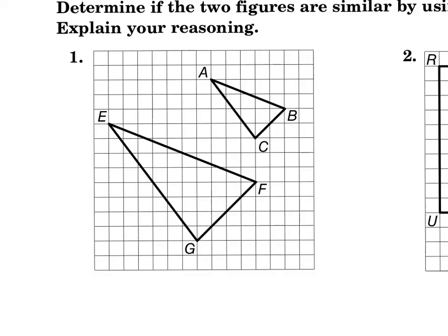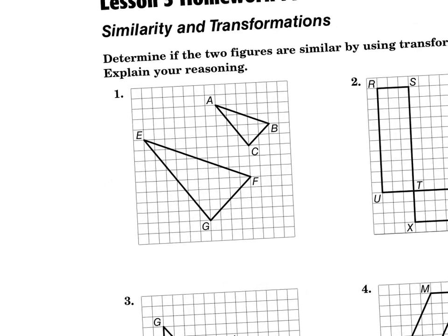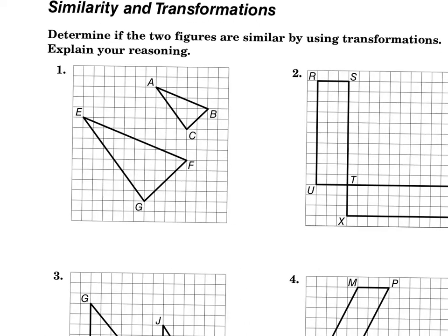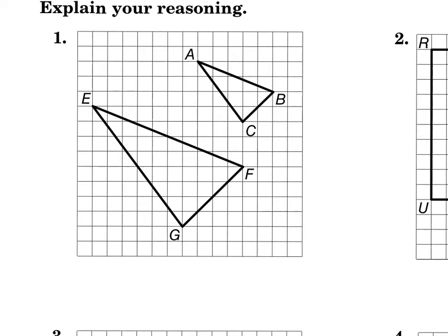I'll show you exactly what I mean. So as we get into these problems, it says to determine if the two figures are similar by using transformations, and we have to explain our reasoning. So we're looking at triangle ABC and triangle EFG. What we're going to do here is, I think everybody sees that if we translate this shape here, they're not going to be exactly congruent. But we can test to see if they're similar. So here's what we're going to do. We're going to find the lengths. I think everybody would agree that GF should match up, big question mark over that, should match up with BC. So let's check.